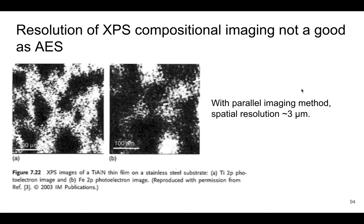Here you can see the differences — this is an XPS compositional map, and we're looking at 100 microns here. It just doesn't look that great. This is something that's not typically done, but AES compositional mapping is definitely viable because of the use of electrons.